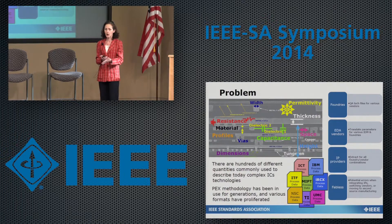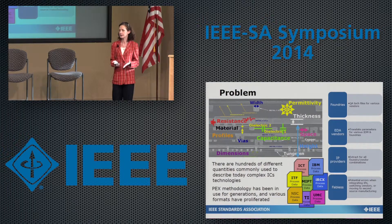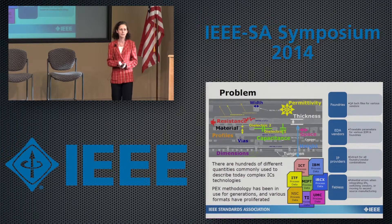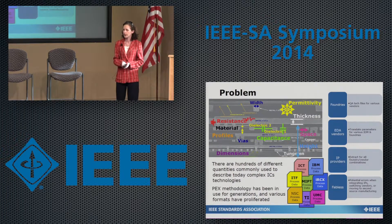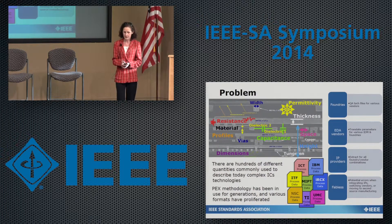That creates a problem for all constituents of this industry. It's a problem for foundries because before releasing any PDK, they have to QA the same information for all vendors. It's a problem for EDA vendors because they have to convert information from all these foundries, described in different ways, back into the same tools. And for IP providers, they have to provide information for all possible combinations of EDA tools as well as foundries — an explosion of work that could be avoided with standardization.